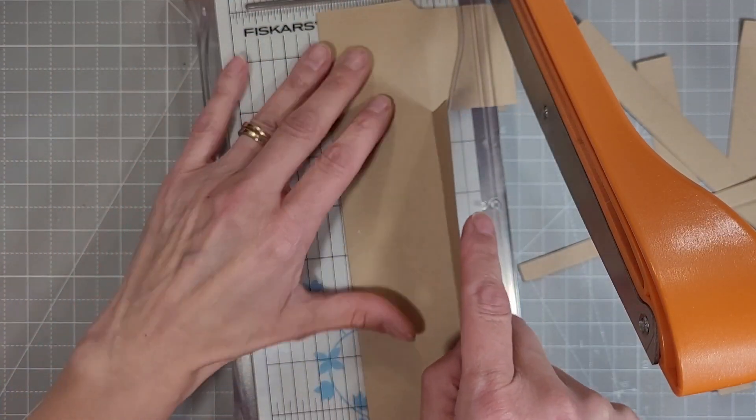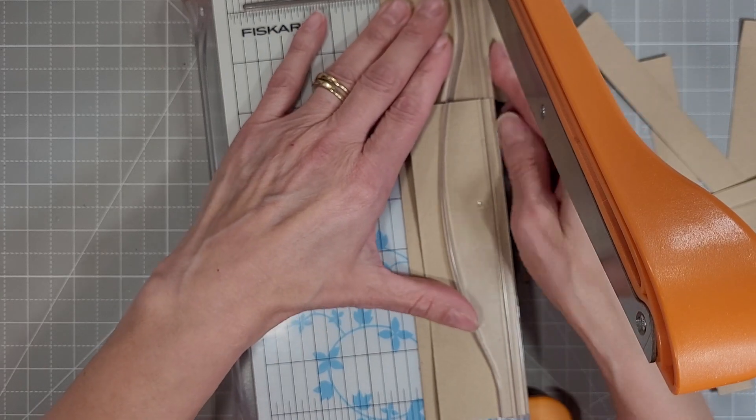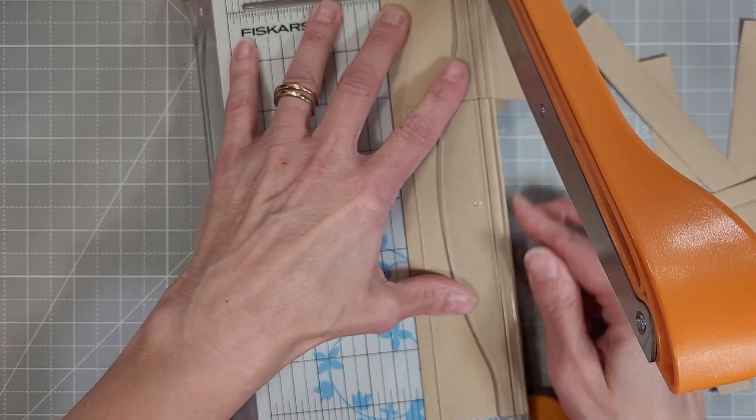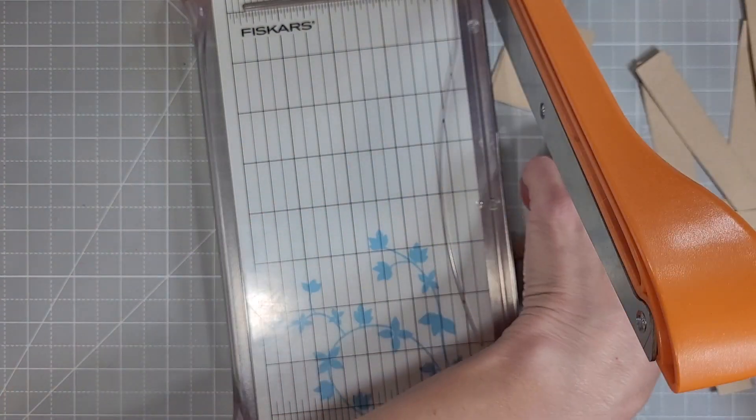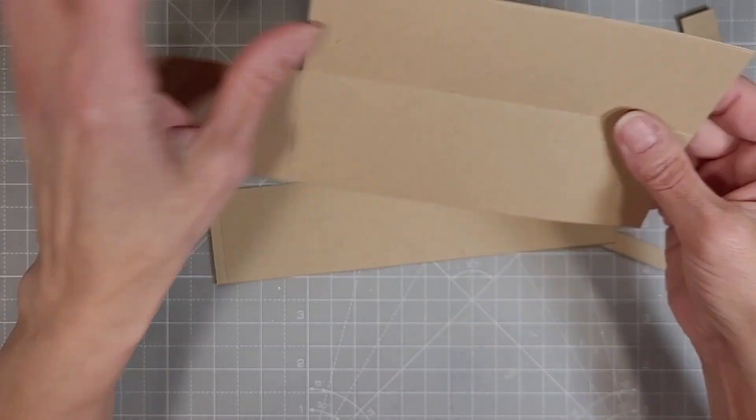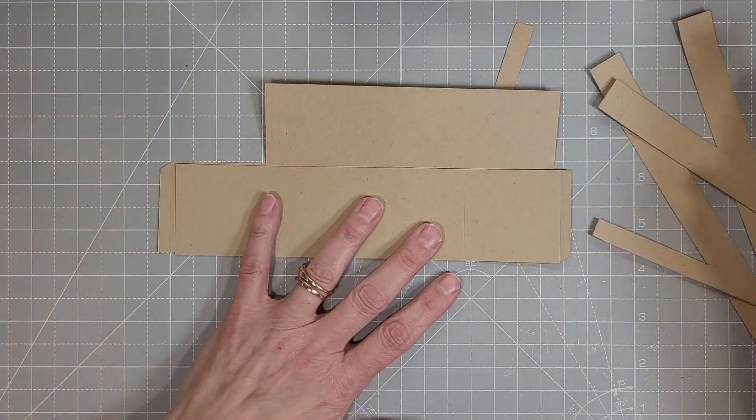We're going to keep this back panel and normally I would say don't fold that over because you want it to stay upright, but in this case we're going to put cardstock on both the front and the back and that'll reinforce it so that fold won't cause any problems.